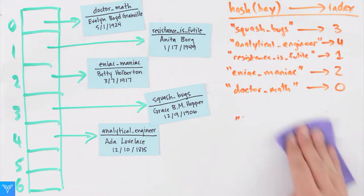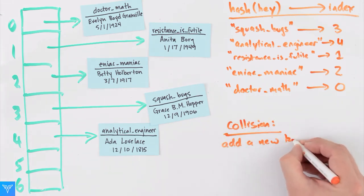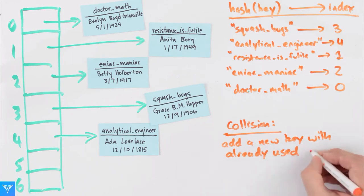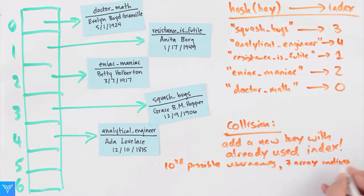There is one possibility we haven't considered yet, that two keys get hashed to the same array index. This is called a collision. And in some sense, it's inevitable. We have 10 to the 28 possible usernames, and only seven indices. So on average, 10 to the 27 usernames are assigned to the same index.